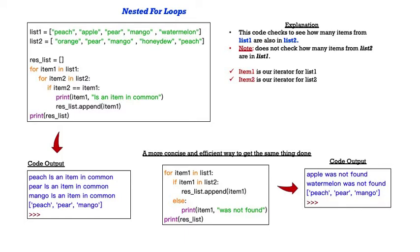If item 2, our iterator from list 2, equals an item from list 1. So if item 2 equals our iterator item 1, those are the individual elements of each list, then print item 1 is an item in common. Then append that item, item 1, to our res underscore list, our resultant list, and then print that out. And you see in the lower hand corner, peach is an item in common, pear is an item in common, and so is mango, and then it prints out the list.